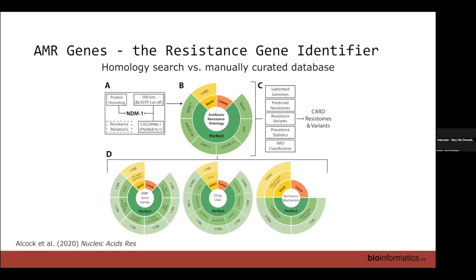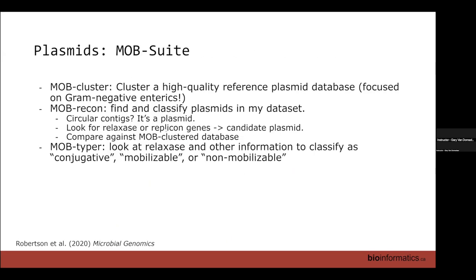RGI has already been covered, but it's a very good program — I consider it first in class for identifying antimicrobial resistance genes. MOB Suite is a collection of programs developed at the National Microbiology Laboratory by James Robertson, for working on identifying and characterizing plasmids.